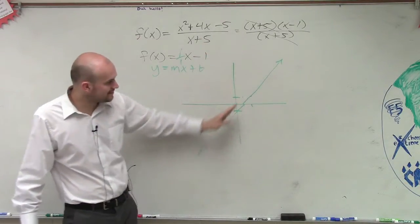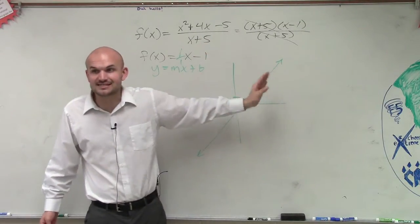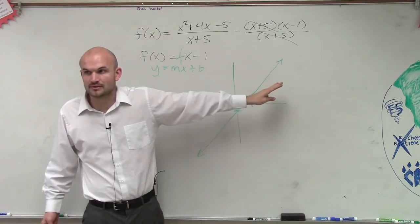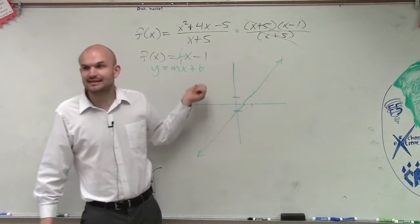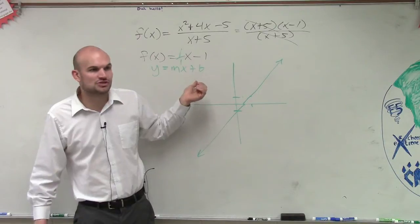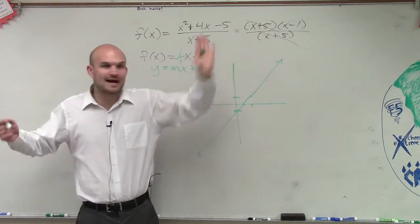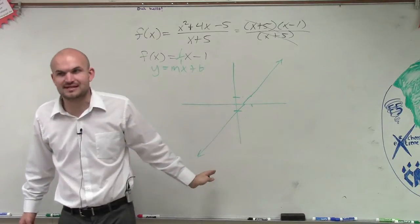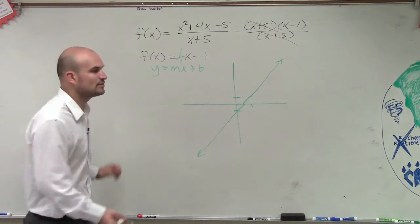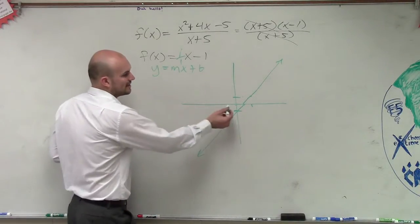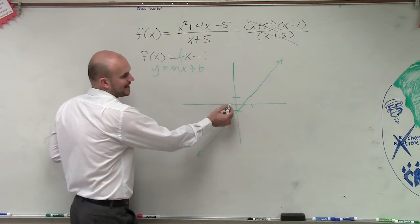So therefore, even though the graph looks like this, x still cannot equal negative 5. However, you guys know this is a line. It's not going to approach an asymptote. It's a line. So it's not going to be approaching an asymptote. So we're not going to draw a dotted line, because the graph does not approach that. However, we do have a discontinuity at negative 5.